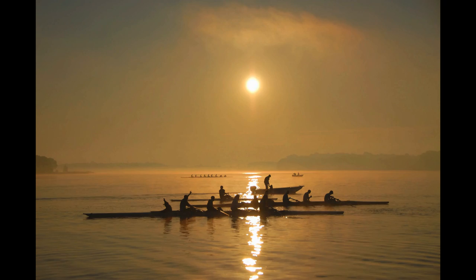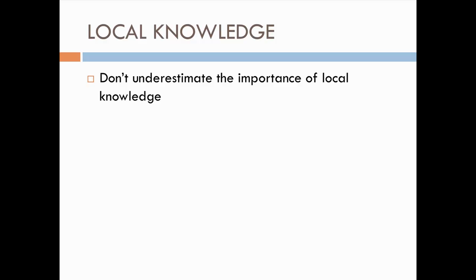Just because you can pull back shadows and fill in dark areas doesn't mean you always should. Here's an example of leaving the silhouettes — this is sunrise on the Chester River in the fall. I liked the fact that it was silhouetted and didn't want to show people's faces. This gets into local knowledge — knowing when, where, and what time to go to produce good images. The Chester River is a beautiful place to photograph.